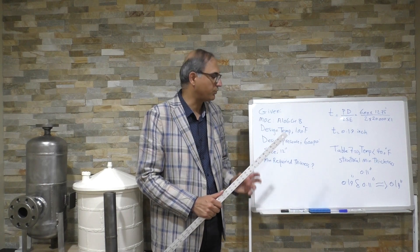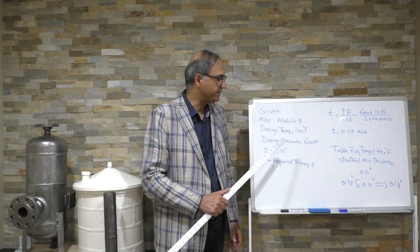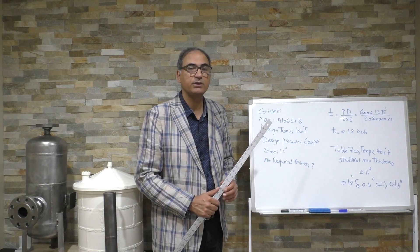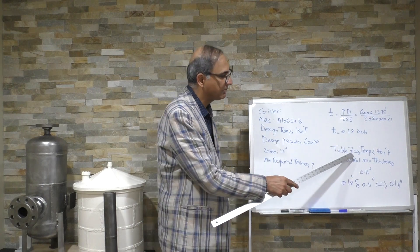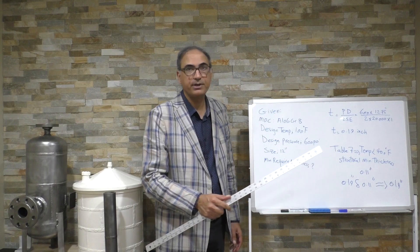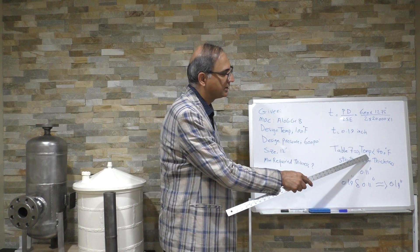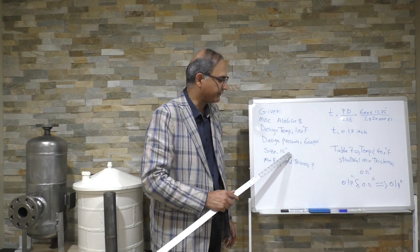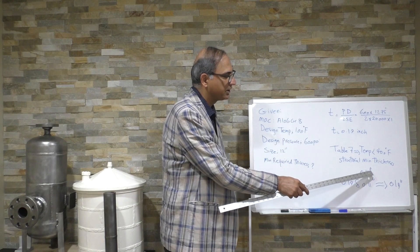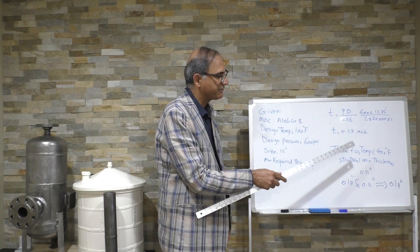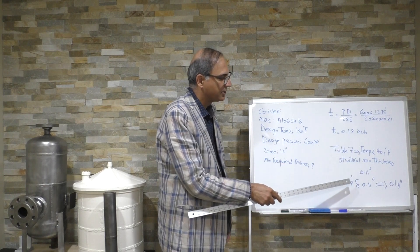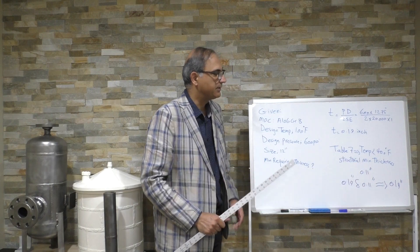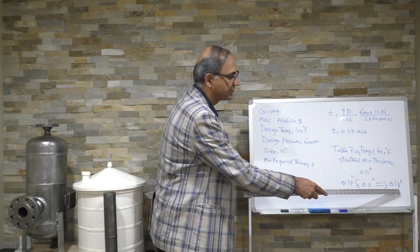Now we verify the structural minimum thickness for this 12-inch pipe at 100°F design temperature. We go to Table 7 in API RP 574 — in the column for temperature less than 400°F, the structural minimum thickness for 12-inch pipe is 0.11 inch. We now compare this value with the pressure design thickness and take the higher one.